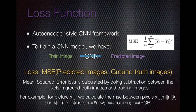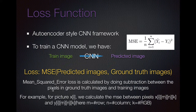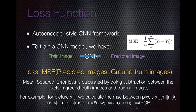For the loss function, we use it to train the model. We use CNN to map our training images to predicted images, then calculate the loss between the predicted images and ground truth images. The mean square error loss is calculated by doing subtraction between the pixels in ground truth images and training images — computing the MSE between pixels x_i(m,n,k) and y_i(m,n,k), where m is the number of rows, n is the number of columns, and k is equal to red, green, or blue.